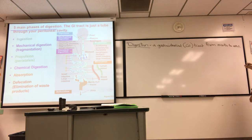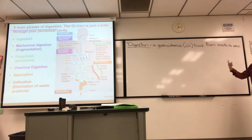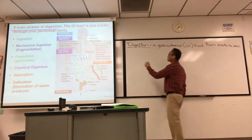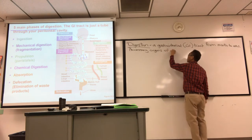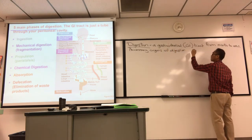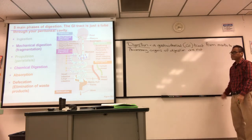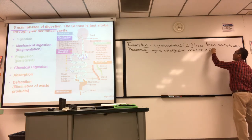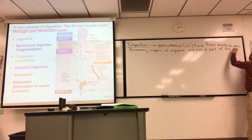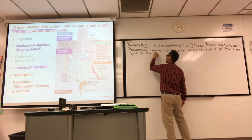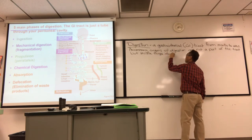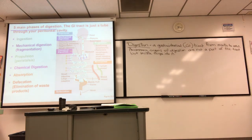When we talk about all the things along the tract, including things that secrete into it — so you have the tract itself, a tube from mouth to anus — if something is not in the tract but secretes things into it, it's called an accessory organ of digestion. Accessory organs are not part of the tract but secrete things like saliva, enzymes, and bile into it.